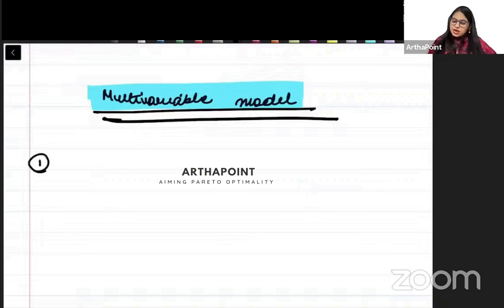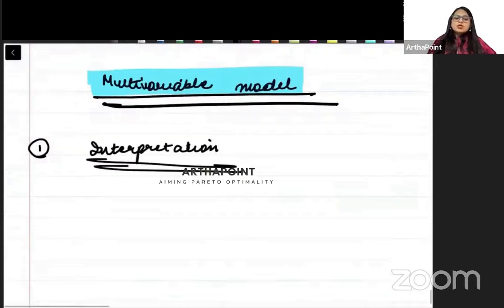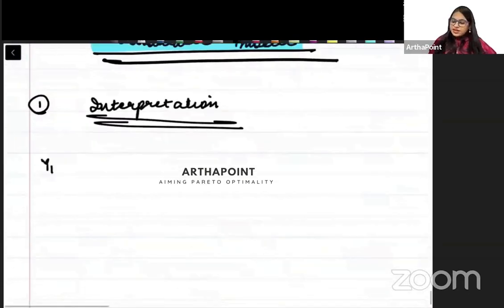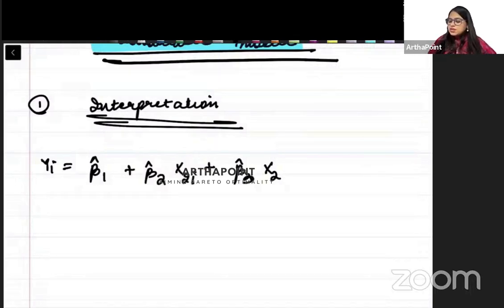First, let's try to understand how we interpret a multi-variable model. Suppose I tell you that yi equals beta naught plus beta 1 x1i plus beta 2 x2i plus beta 3 x3i plus ui. Suppose this is a multi-variable model given to you.